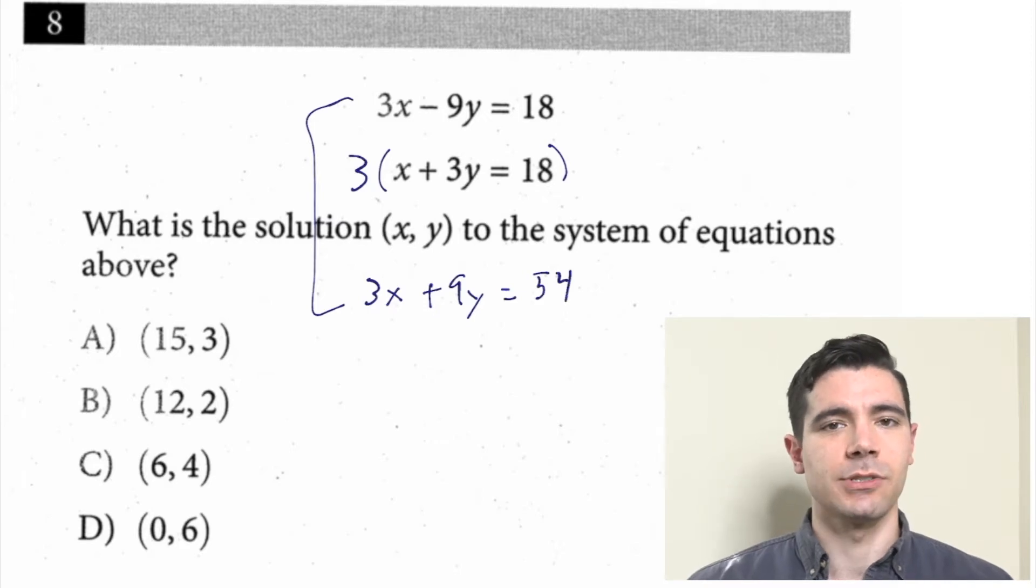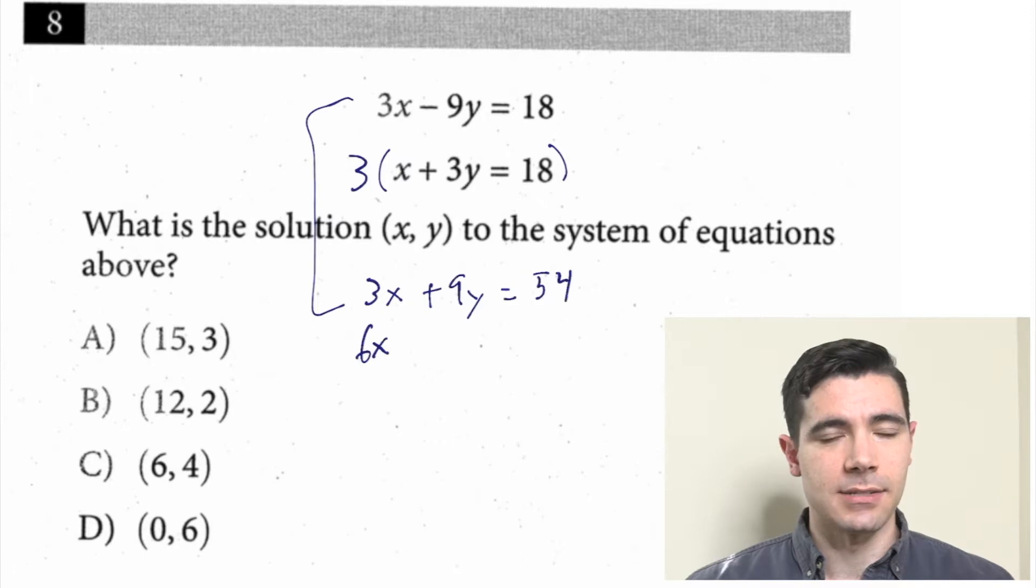So we've got these two equations now. Well, why don't we add them together? 3x plus 3x is 6x. 9y plus negative 9y is 0. Oh, nice. So now we're only going to have an x term. And then 18 plus 54 is 72. So 6x equals 72. Divide both sides by 6, and x equals 12.